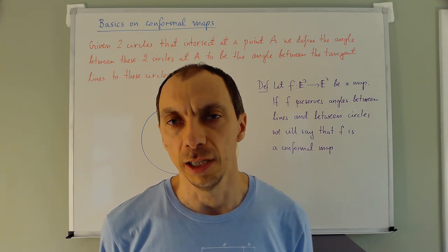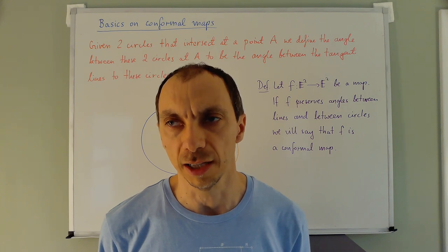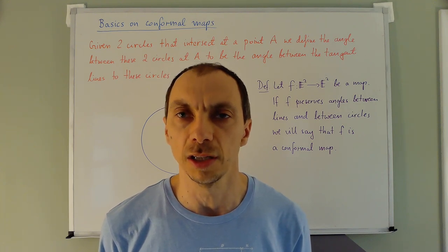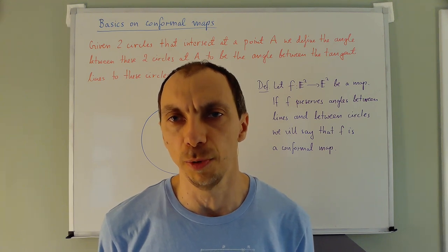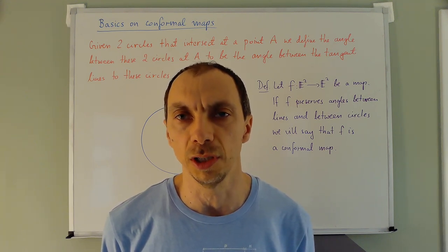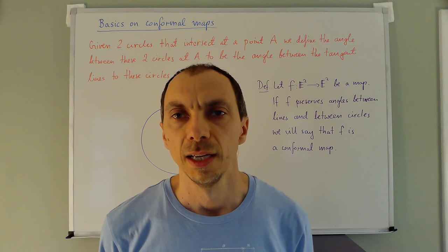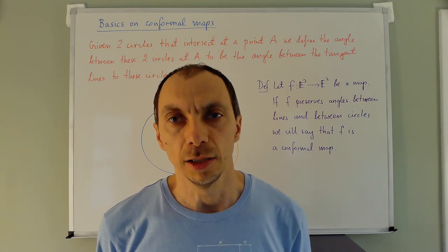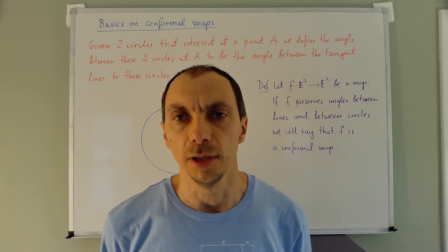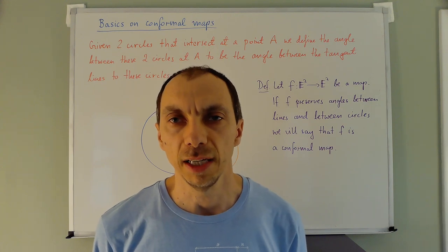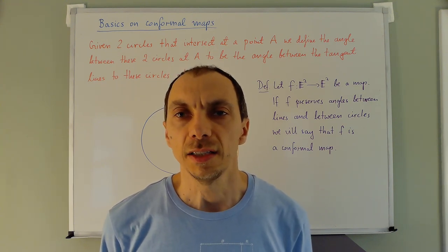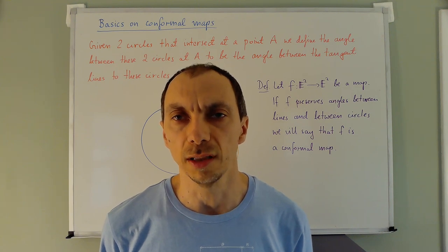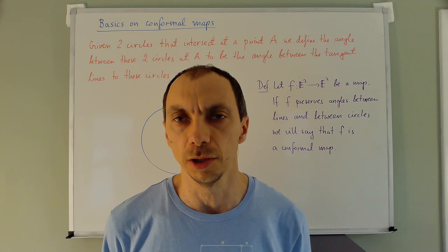How do you define an angle between two smooth intersecting curves? You take the tangent lines at the point of intersection and say the angle between these curves at this point is just the angle between the corresponding tangent lines. That's all well and you can definitely develop the theory this way. However, that's really going into the terrain of differential geometry — something we will have to do at least partially when we talk about spherical and hyperbolic geometry.